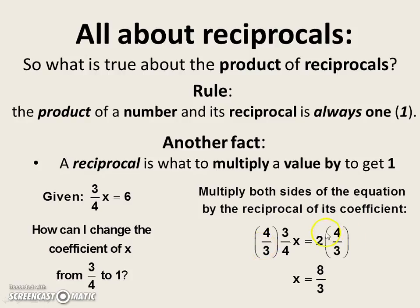But remember, whatever we do on this side, we've got to do the same thing on the other. So we have to multiply what's on the right side by four-thirds as well. And that gives us two times four is eight-thirds. So our solution to this equation is actually eight-thirds.